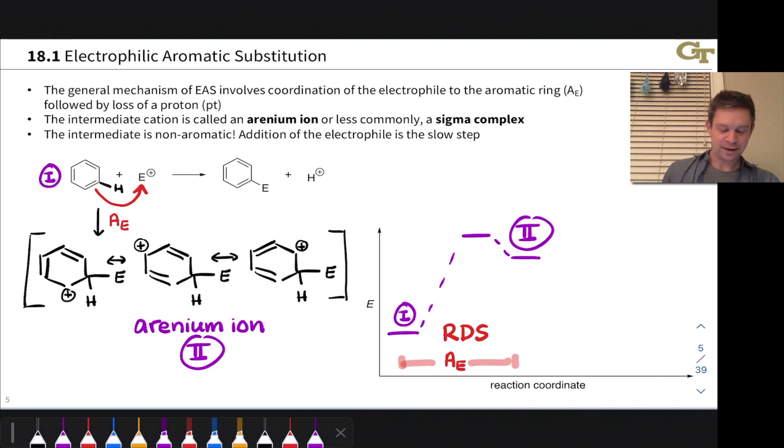Now, that arenium ion has cationic character at these three positions, but a nucleophile does not attack at those positions. If one did, that would produce another saturated carbon, say right here, ortho to E, and we wouldn't restore aromaticity in that case, right? We have two saturated carbons within the ring and two double bonds. That's a conjugated diene, but not an aromatic by any means.